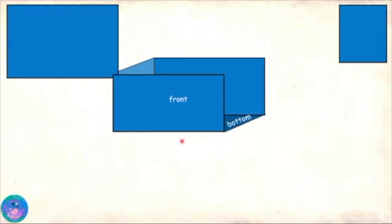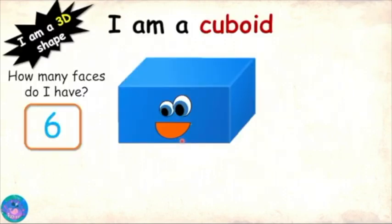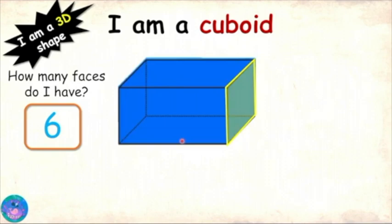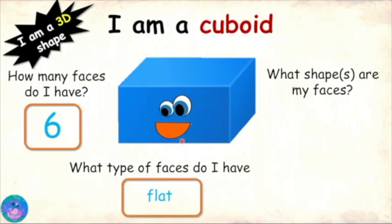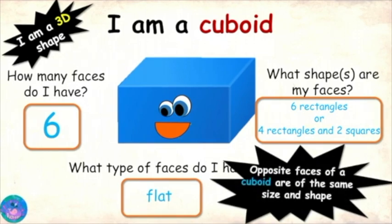Let me show you how they form my shape. Now I know you have 6 faces — they are top, bottom, front, back, left side, and right side. That is correct. Now do you remember what type of faces I have — flat or curved? Flat. And what shape faces do I have? Rectangles. Well, sometimes — all my faces could be rectangles, or I could have 4 rectangles and 2 squares. And do remember that my opposite faces are of the same shape and size.